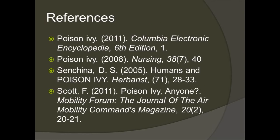Overall, there is no good way to get rid of all the poison ivy growing in the United States. The best way to handle this plant is to know how to identify it and stay away from it.